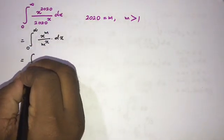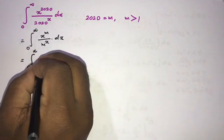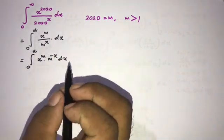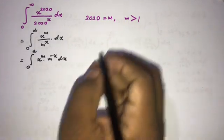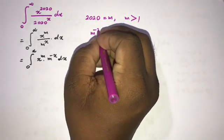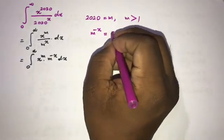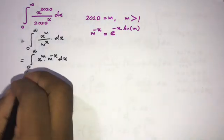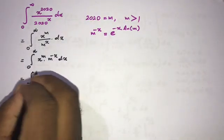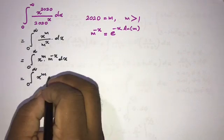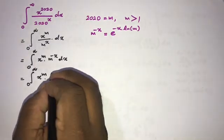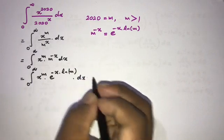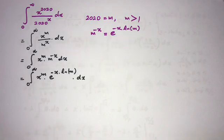We can rewrite this as x to the m power times m to the minus x dx. Now we know that m to the minus x is equal to e to the minus x times the natural log of m. So we can write the integral from zero to infinity of x to the m times e to the minus x times natural log of m dx.